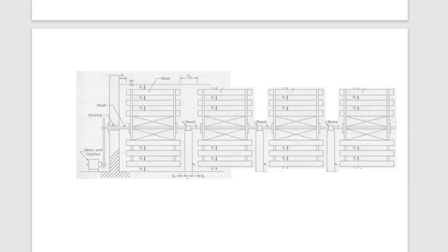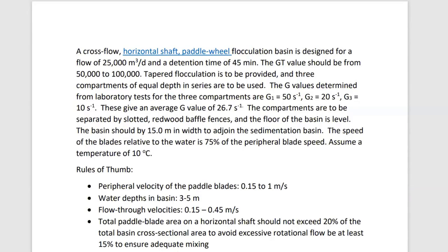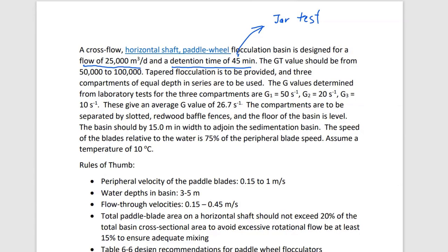In this schematic, notice we have a center shaft and these arms are rotating around. We are designing this for a design flow of 25,000 meters cubed per day and a detention time of 45 minutes. This information we would get from a jar test. Also from the jar test, we would obtain a GT value — the G value we used last week in the rapid mix problem.